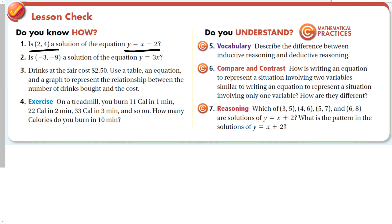How is writing an equation with two variables similar to writing one with one variable? Both contain variables and unknown values. With one variable you're solving for one quantity; with two variables, you're looking for many ordered pairs. Finally, for y = x + 2: (3,5), (4,6), (5,7), and (6,8) are all solutions to the equation.